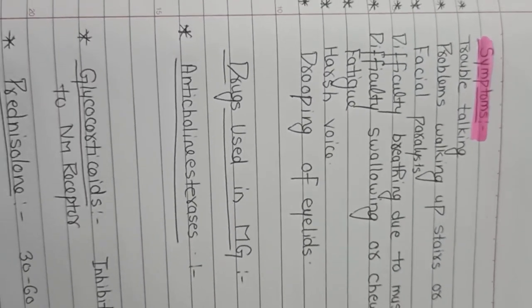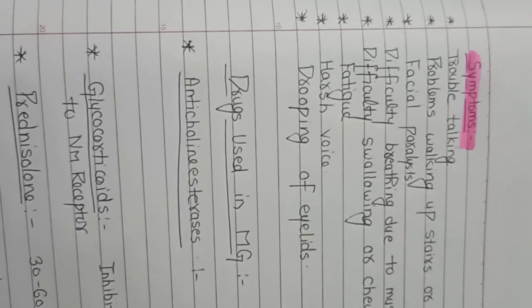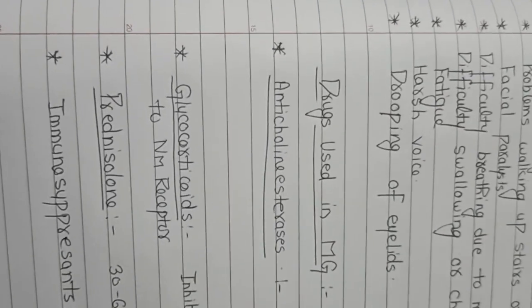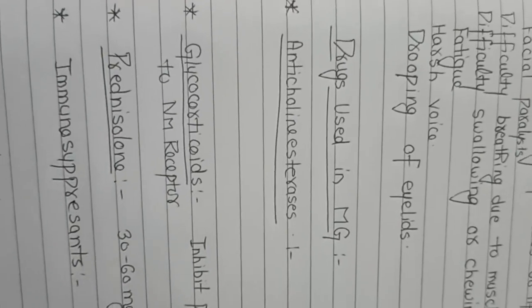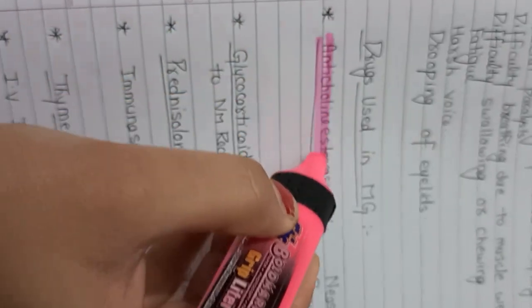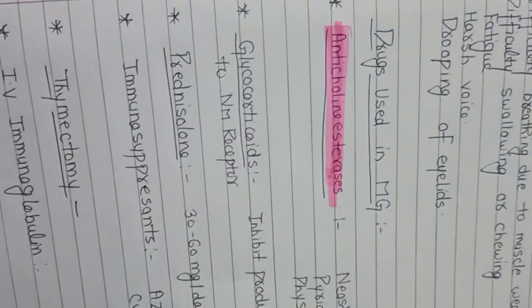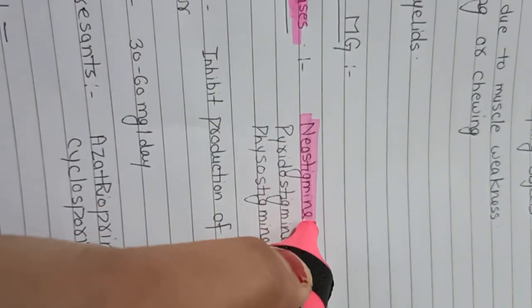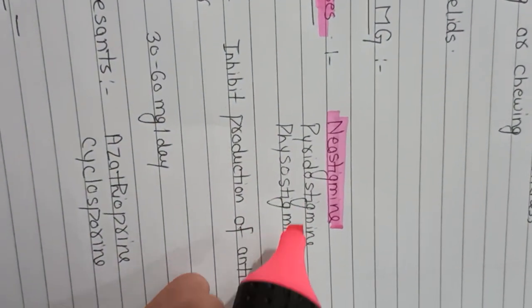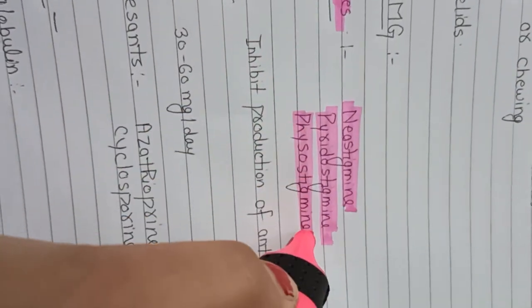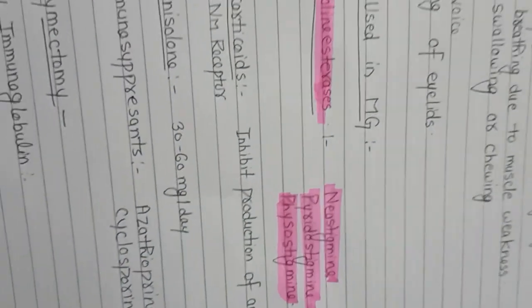Today we will discuss the drugs used in myasthenia gravis. First, we have anticholinesterase — it is a very important category of drug. The drugs in this category are: first, Neostigmine; second, Pyridostigmine; and next, Physostigmine. These three drugs belong to the anticholinesterase category.